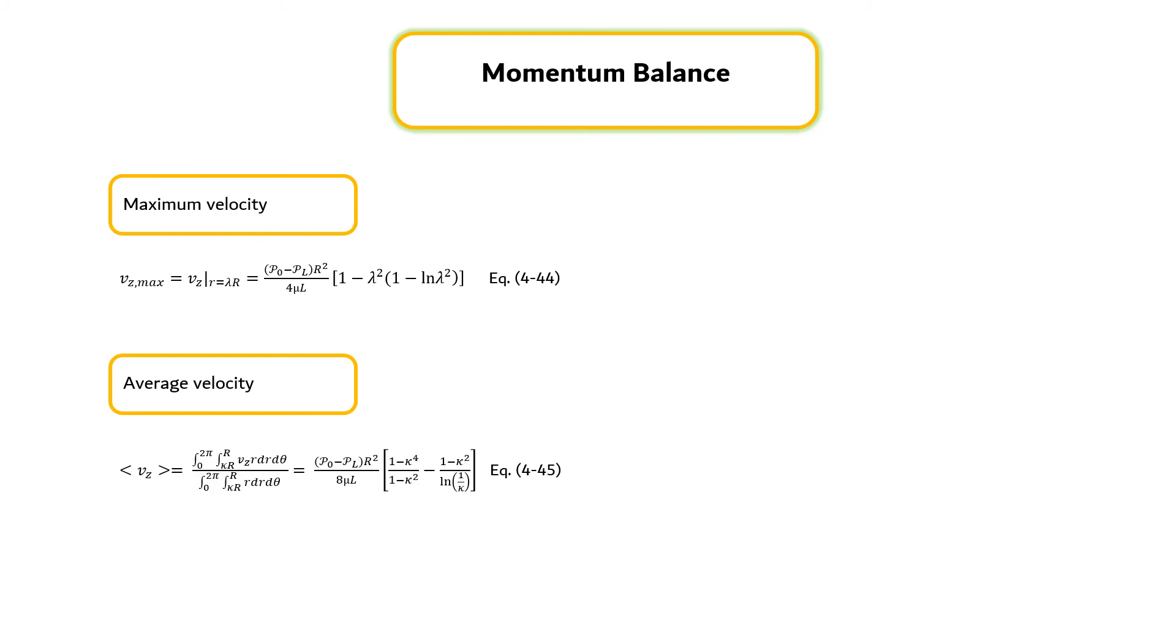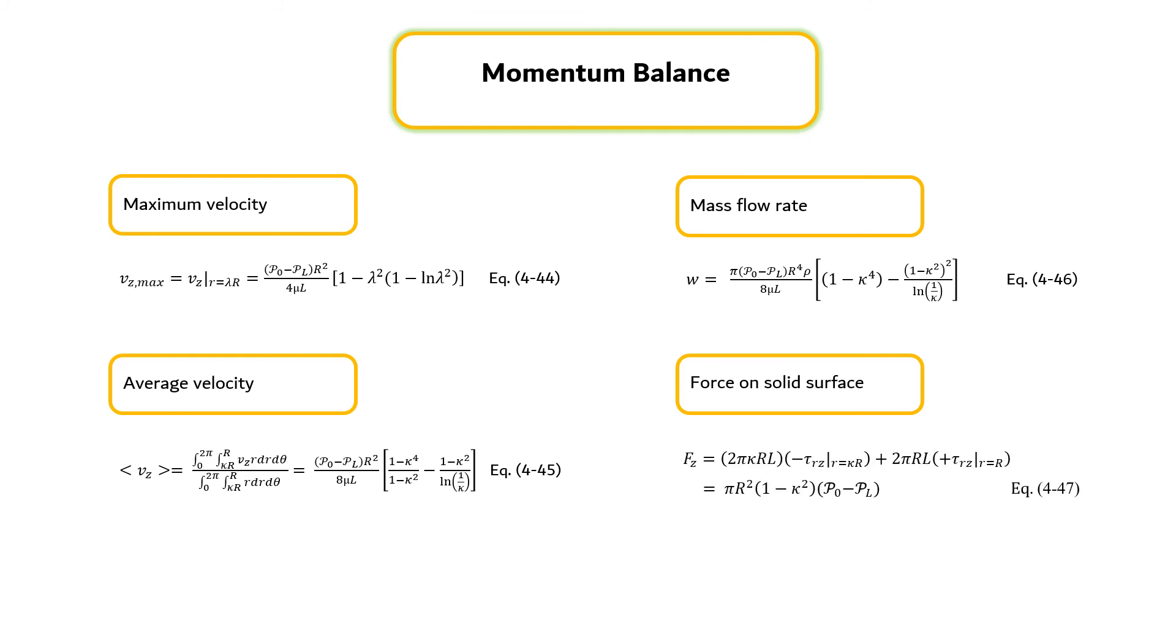Third, the mass rate of flow can be expressed by equation 4.46. Last but not least, the force exerted by the fluid on solid surfaces is obtained by summing the forces acting on the inner and outer cylinder, as shown in equation 4.47.